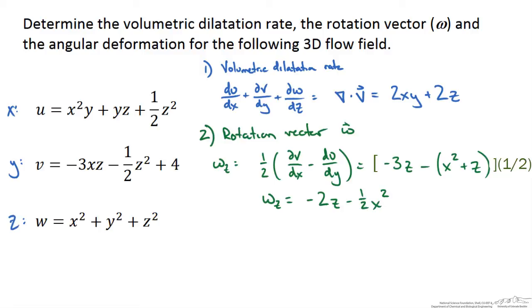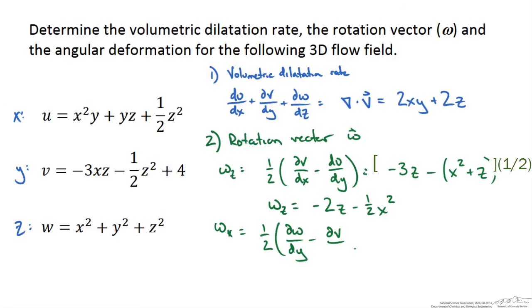We repeat this for the x axis, omega x. We get one-half partial of w with respect to y minus the partial of v with respect to z. This gives us the rotation around the x axis equal to three-halves x plus y plus one-half z.